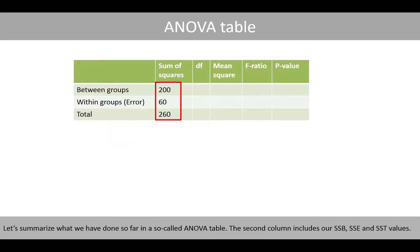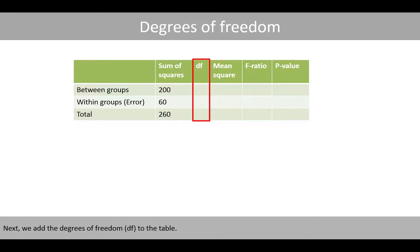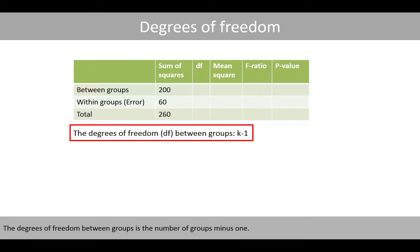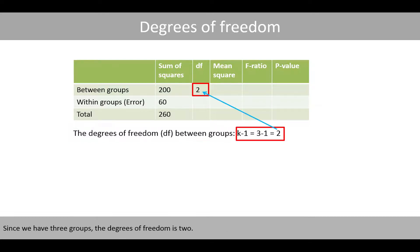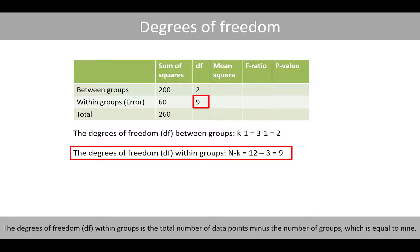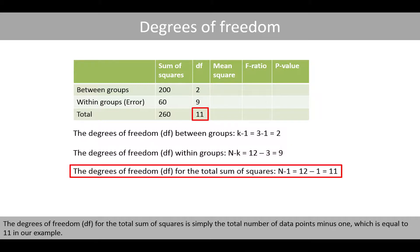Let's summarize what we have done so far in the so-called ANOVA table. The second column includes our SSB, SSE, and SST values. Next, we add the degrees of freedom to the table. The degrees of freedom between groups is the number of groups minus 1; since we have 3 groups, the degrees of freedom is 2. The degrees of freedom within groups is the total number of data points minus the number of groups, which is equal to 9. The degrees of freedom for the total sum of squares is the total number of data points minus 1, which is equal to 11 in our example.